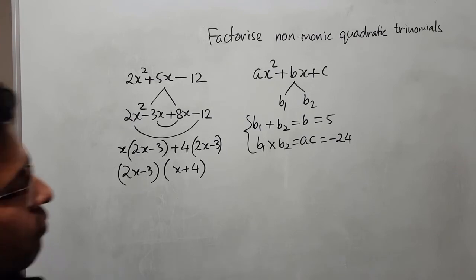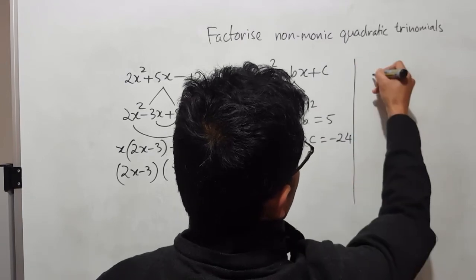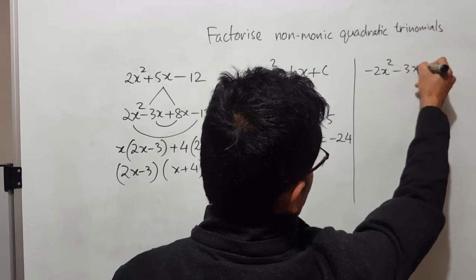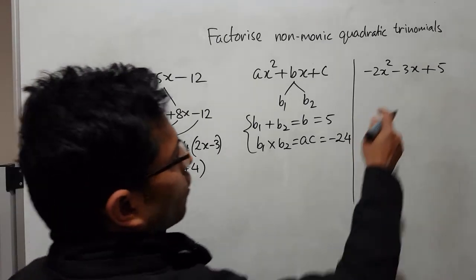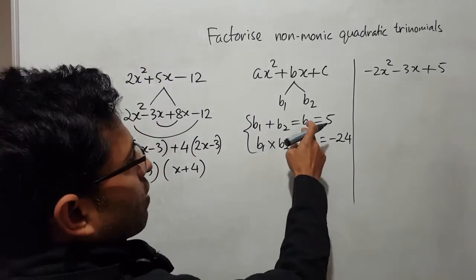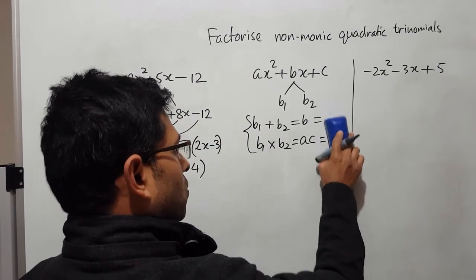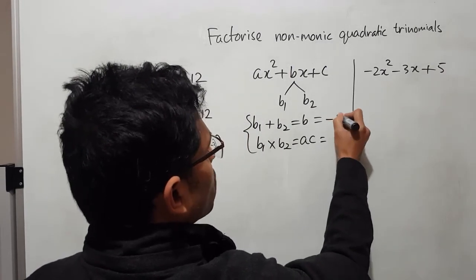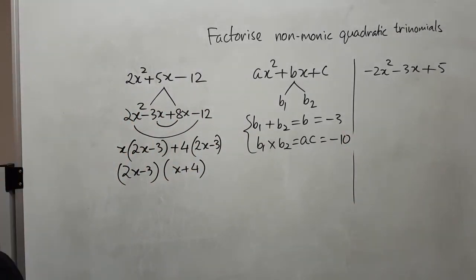Let's have a look at another example for the non-monic. We have minus 2x squared minus 3x plus 5. We do it the same way — we have to break it into two segments. For this problem, b is minus 3, and ac will be minus 10.